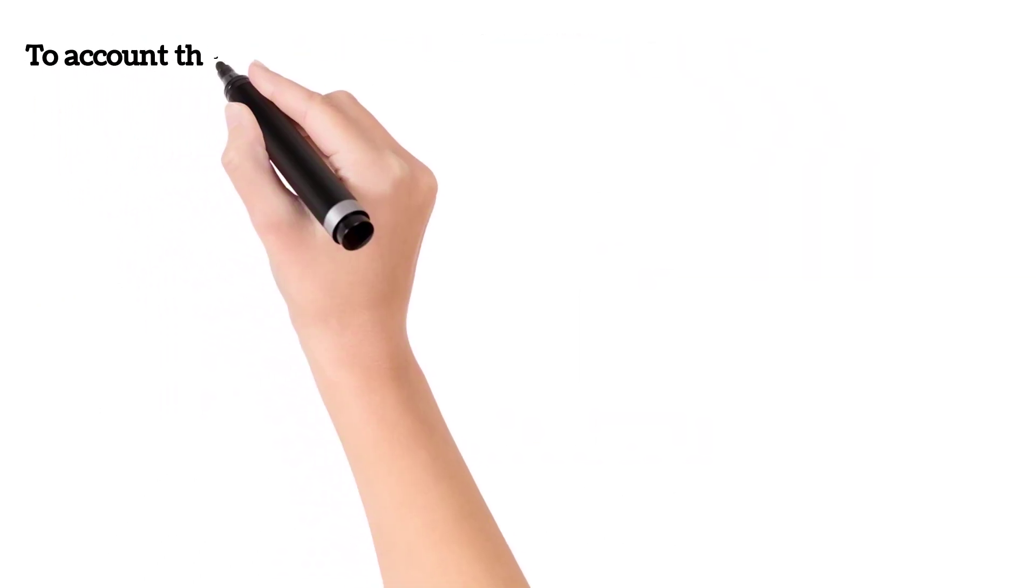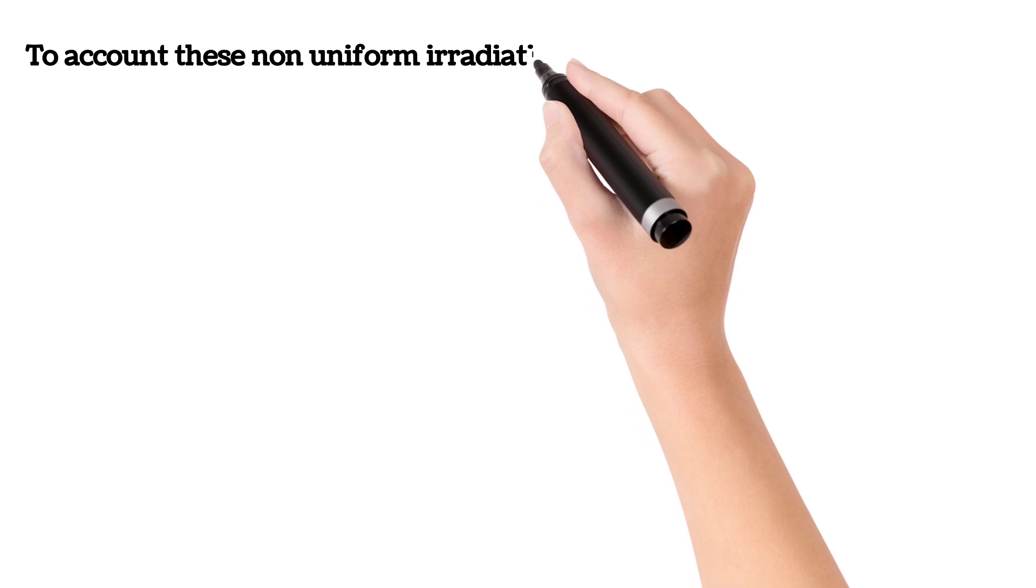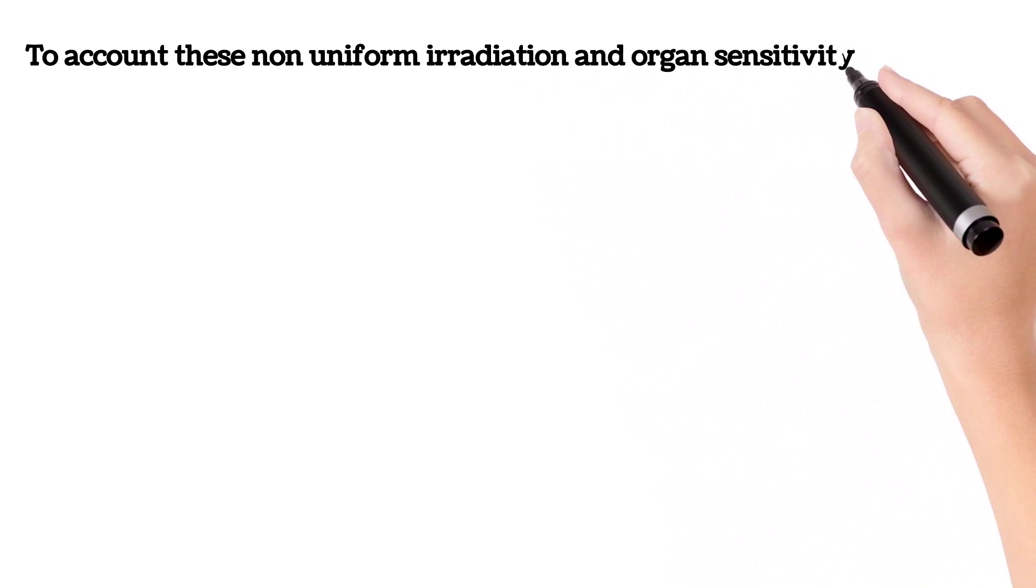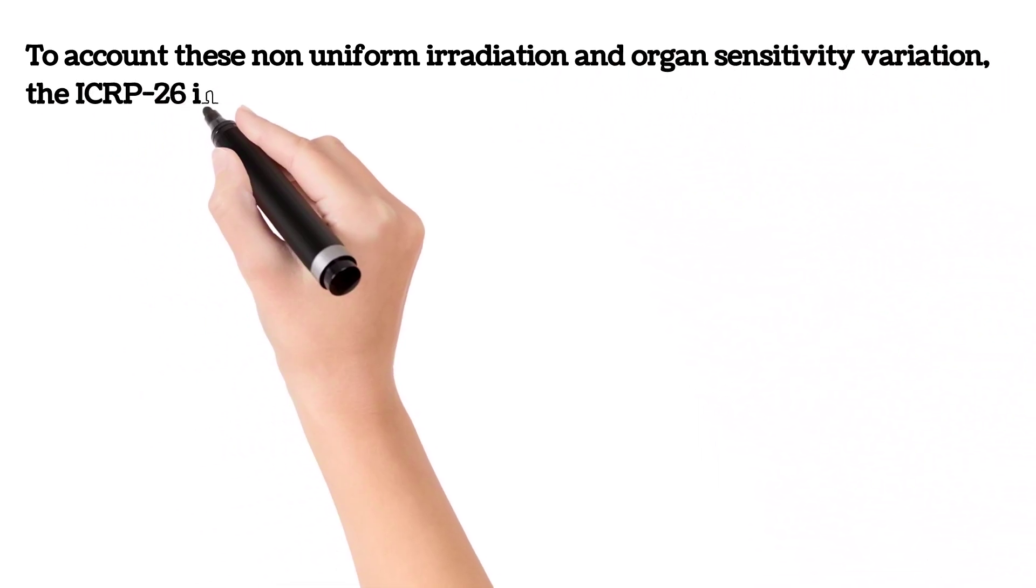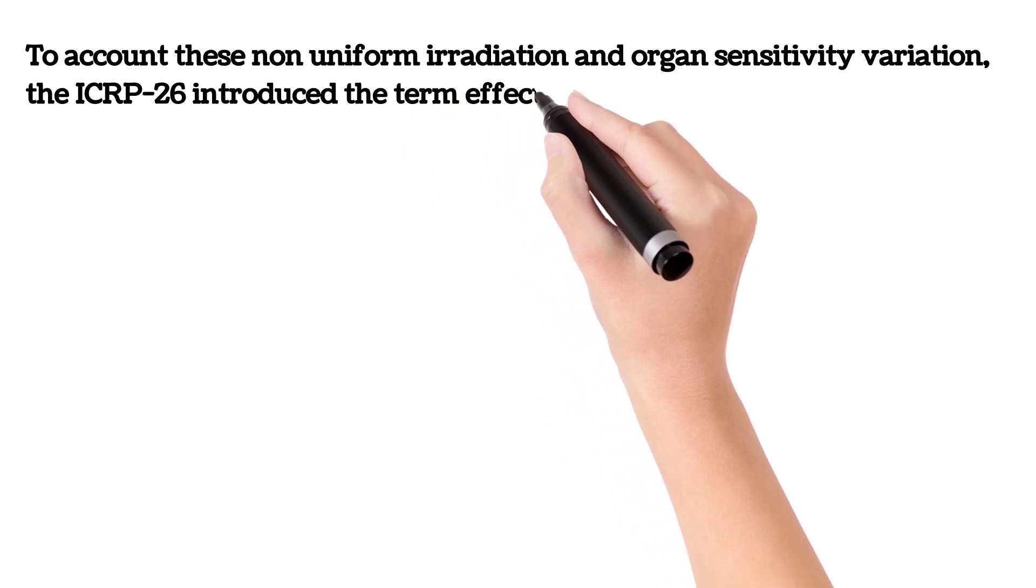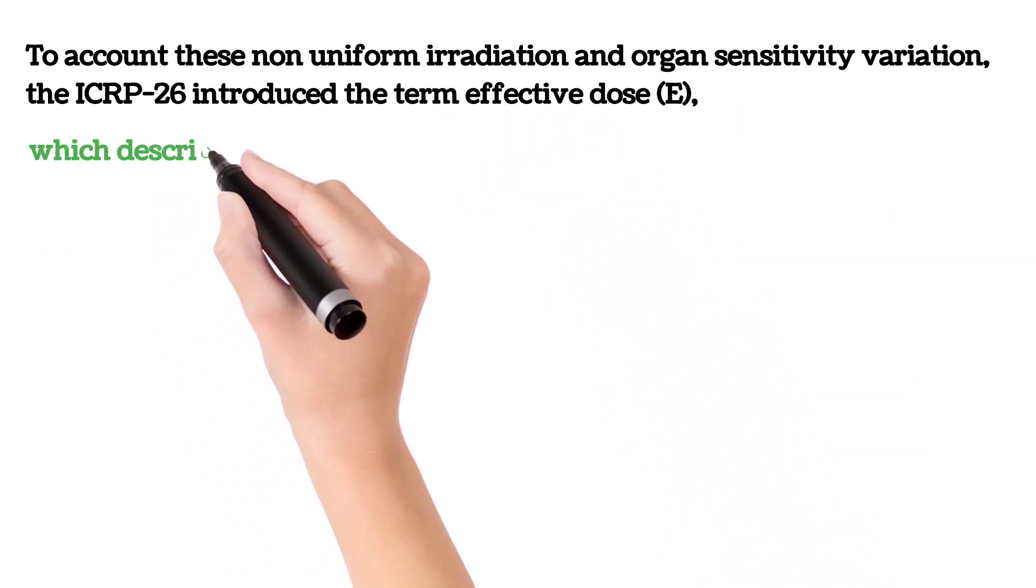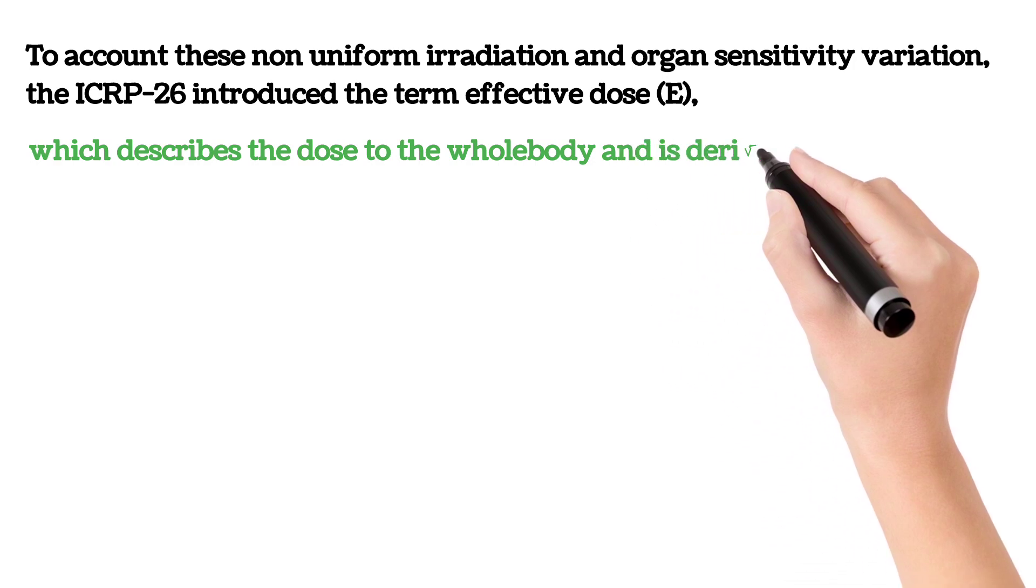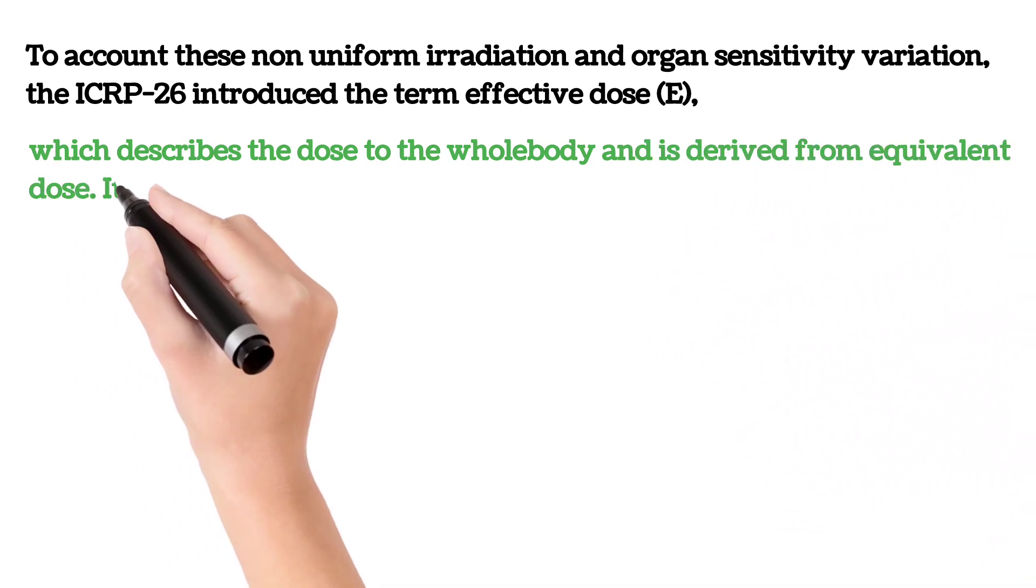To account for these non-uniform irradiations and organ sensitivity variations, the ICRP 26 introduced the term effective dose, which describes the dose to the whole body and is derived from equivalent dose.